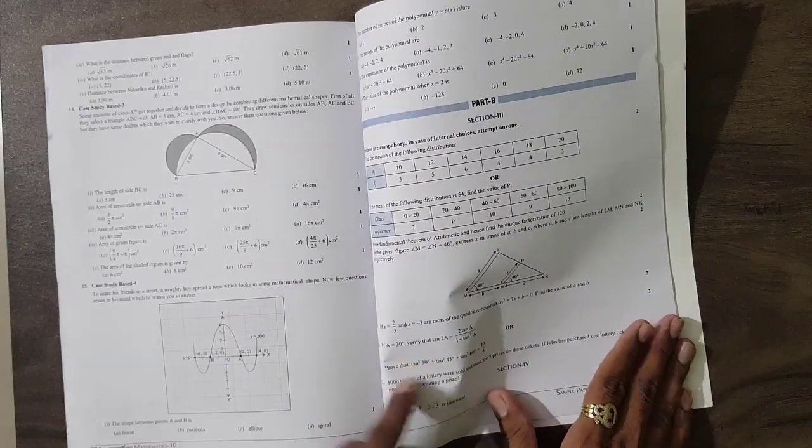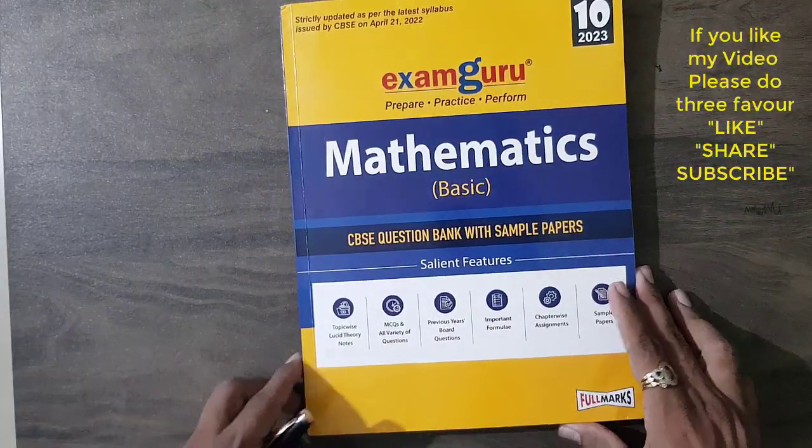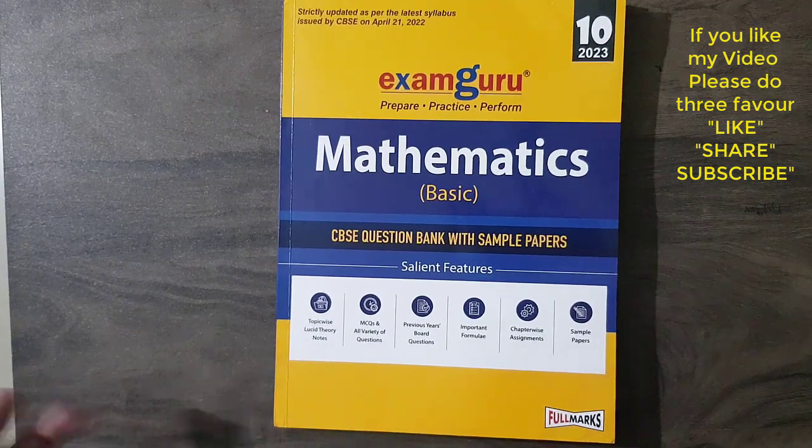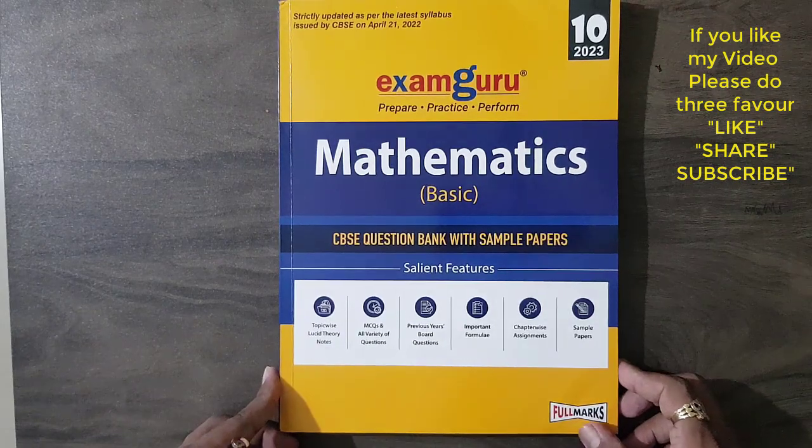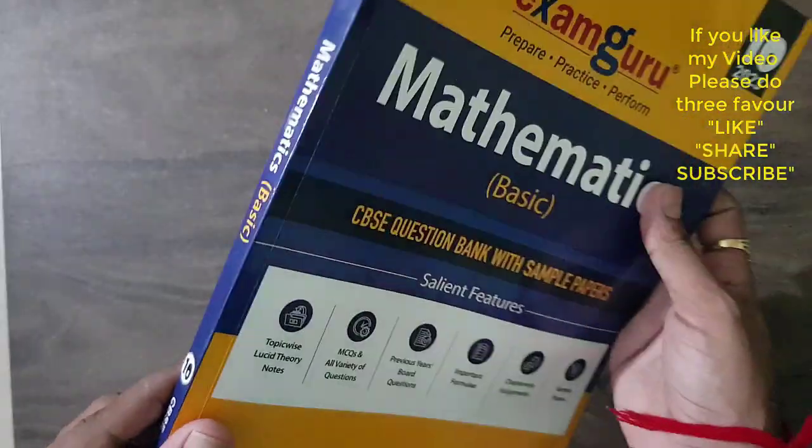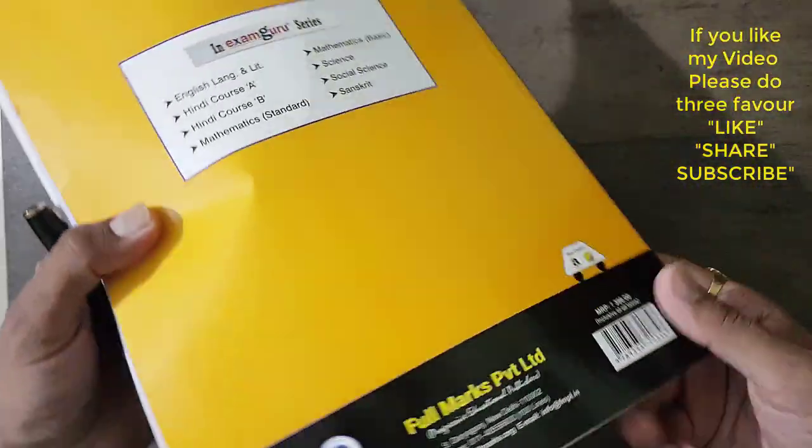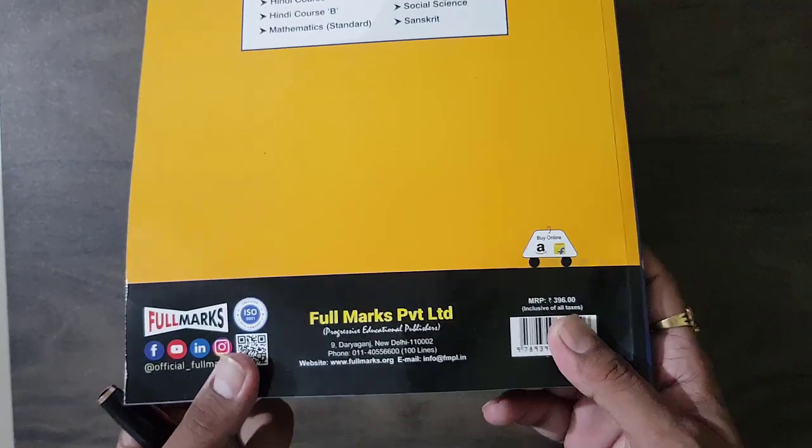I'm sure this is one of the best books if you want to purchase. I will try to give a link of this book in the description also so you can buy from there. And at last I want to say the binding is so perfect and the price - the MRP is 396 rupees.